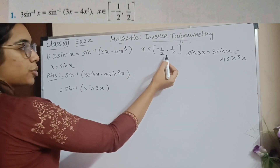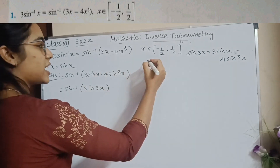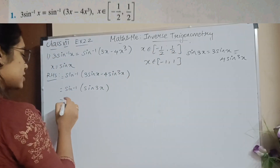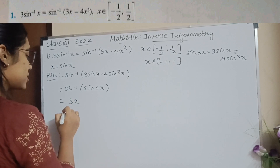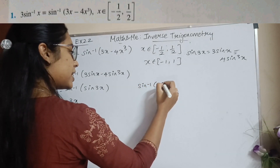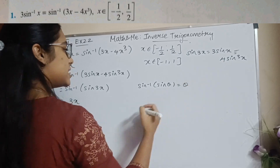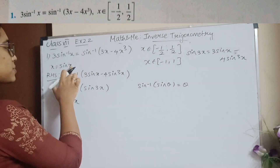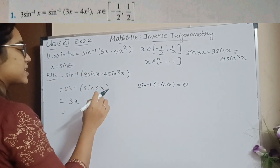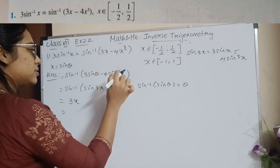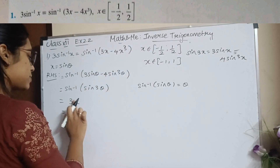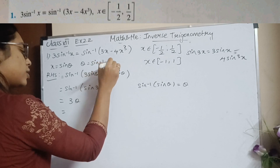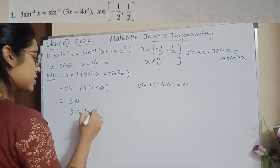This is in the domain, where x belongs to [-1/2, 1/2]. For sine, x belongs to [-1, 1], so we are in the domain. Now, sin⁻¹(sinθ) = θ provided it is in the range. So sin⁻¹(sin3θ) = 3θ. Since x = sinθ, we have θ = sin⁻¹(x), so the RHS becomes 3sin⁻¹(x).